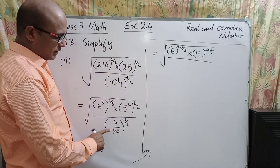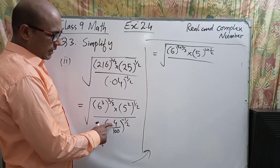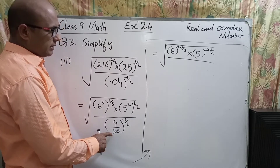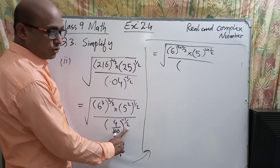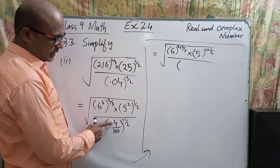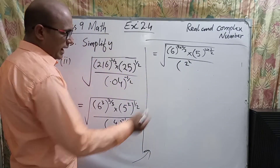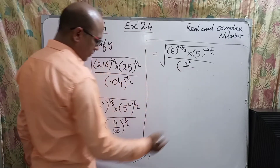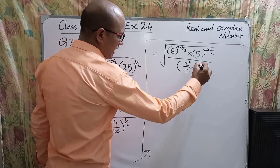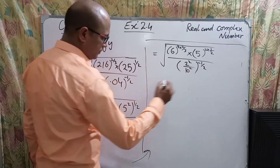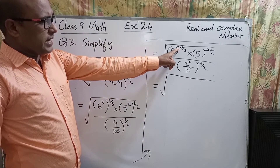In the denominator we have 4 and 100. Since the exponent has 2 in the denominator, we rewrite: 4 as 2 power 2, and 100 as 10 power 2. The whole exponent is minus 1/2.